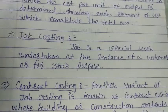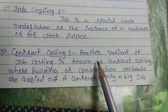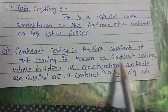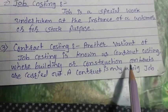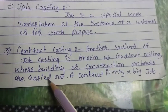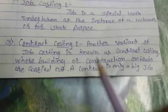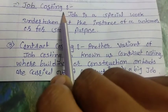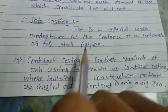The third method is contract costing. Another variant of job costing is contract costing, also known as terminal costing. It is used where building or construction contracts are carried out. A contract is essentially a big job, and contract costing is one type of job costing.